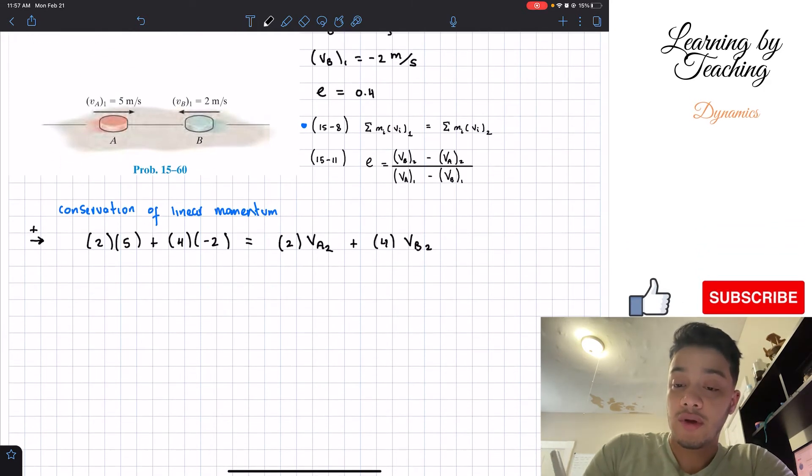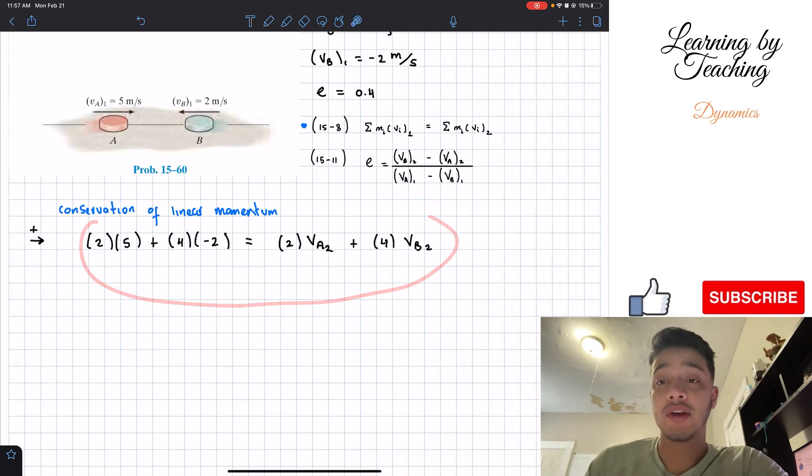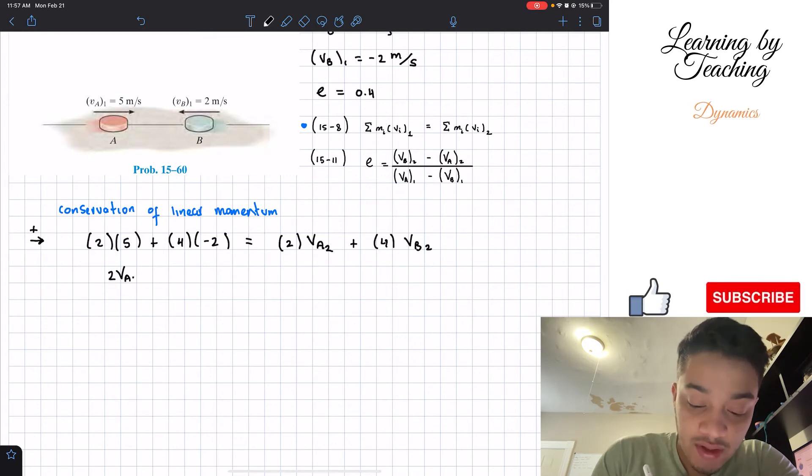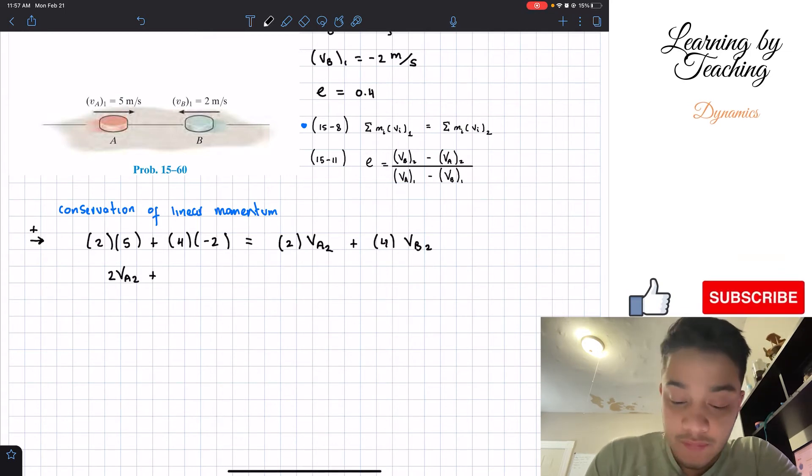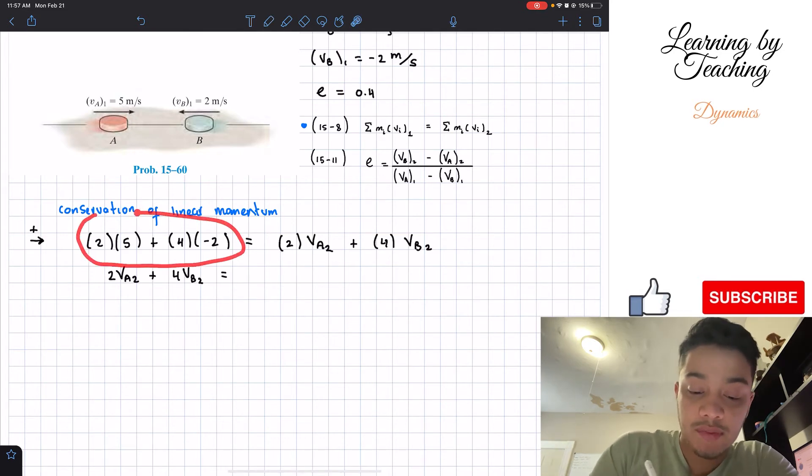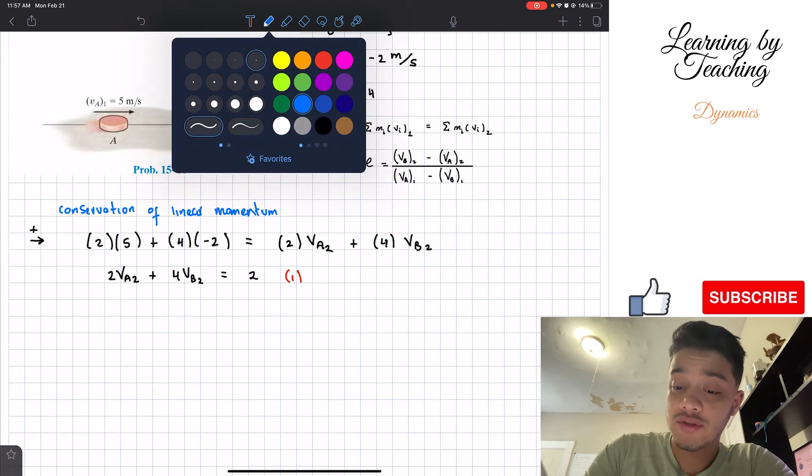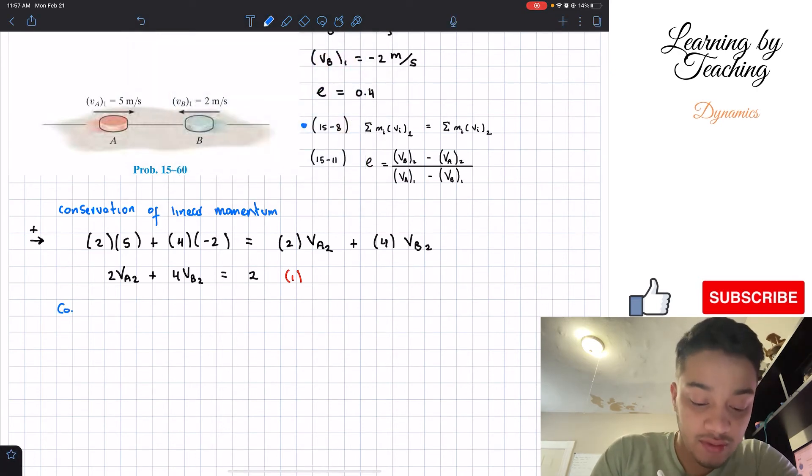So now what I'm going to do is that we have this equation. I'm going to clean it up a little bit. First of all, I'm going to take this right side and I'm going to put it on the left side. So we've got 2 times the velocity of A in the second state. And then we've got 4 times the velocity of B in the final state has to be equal to. And then I'm going to plug this into my calculator and this should give me a total of 2. So now we have one equation. However, we've got two unknowns. So we've got one equation and two unknowns. Therefore, we've got to utilize the second equation, which is the equation for the coefficient of restitution.